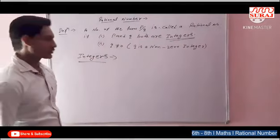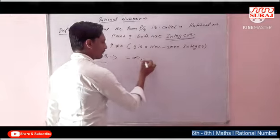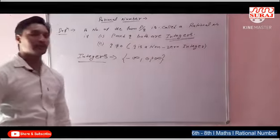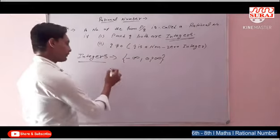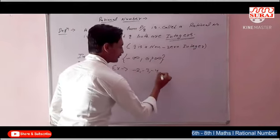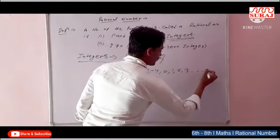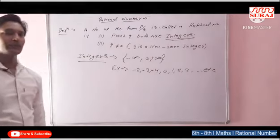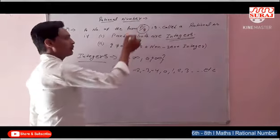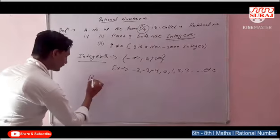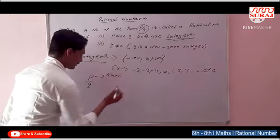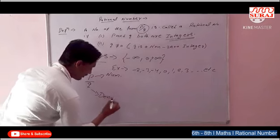Integers kya hote hain — all counting numbers with negative and positive sign: minus infinity, 0, plus infinity. In numbers ka set hoga, woh set of integers banega. For example: minus two, minus three, minus four, zero, one, two, three, etc. Yeh sab integers hote hain. P by Q mein jo P hoga upar wala term hoga use hum bulayenge numerator, aur neeche wala term hoga use hum bulayenge denominator.